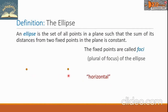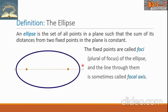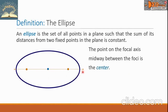Let us draw now the ellipse. Here we have the ellipse. The line through the foci is sometimes called the focal axis. Here is the line, and this is the focal axis. The point on the focal axis midway between the foci is the center. Here is the center.